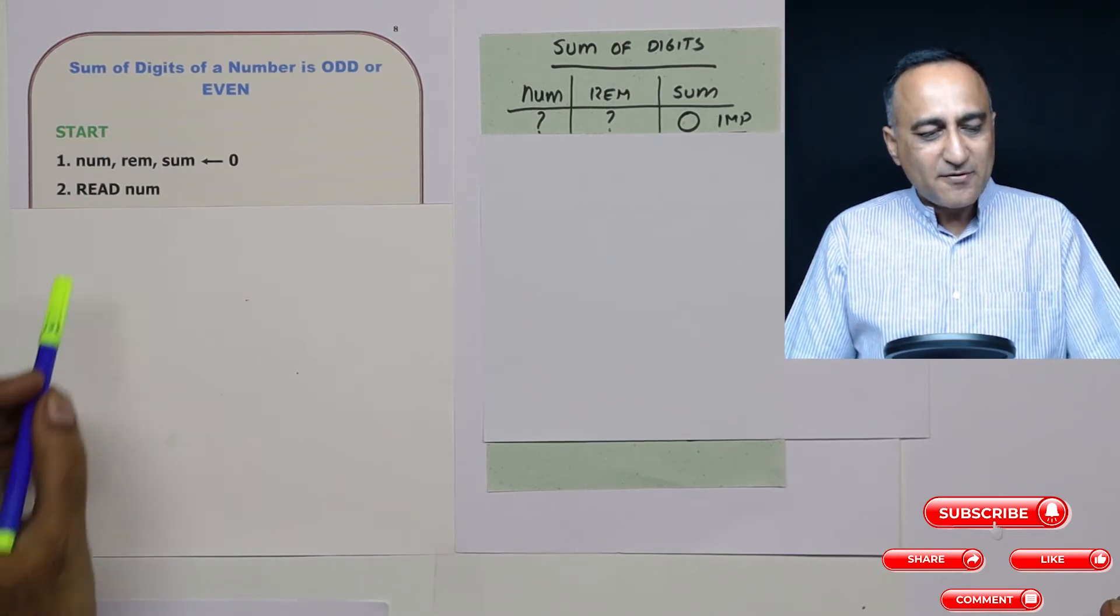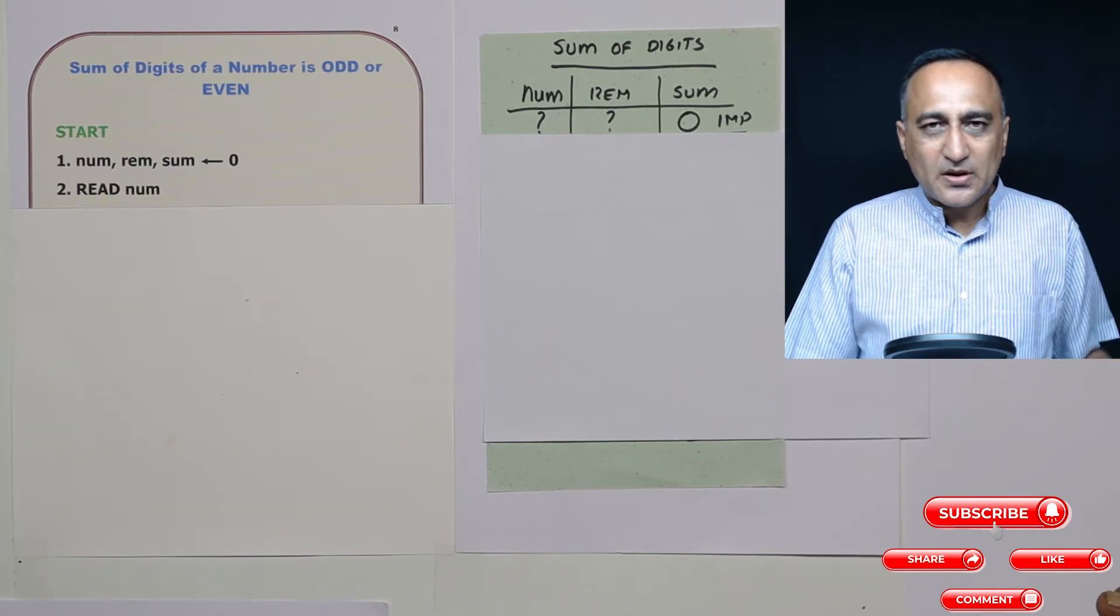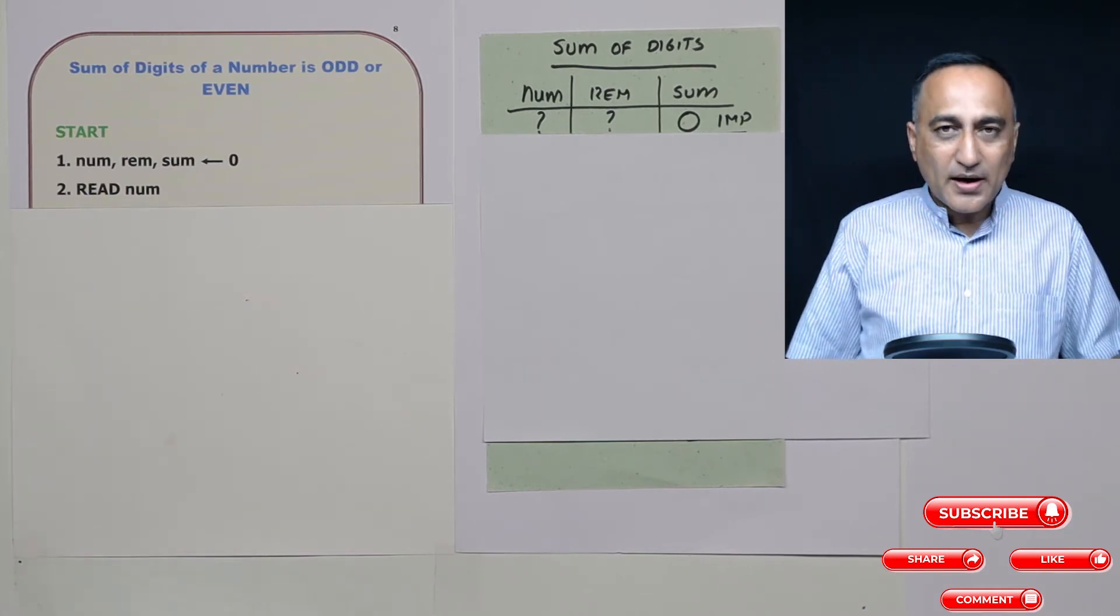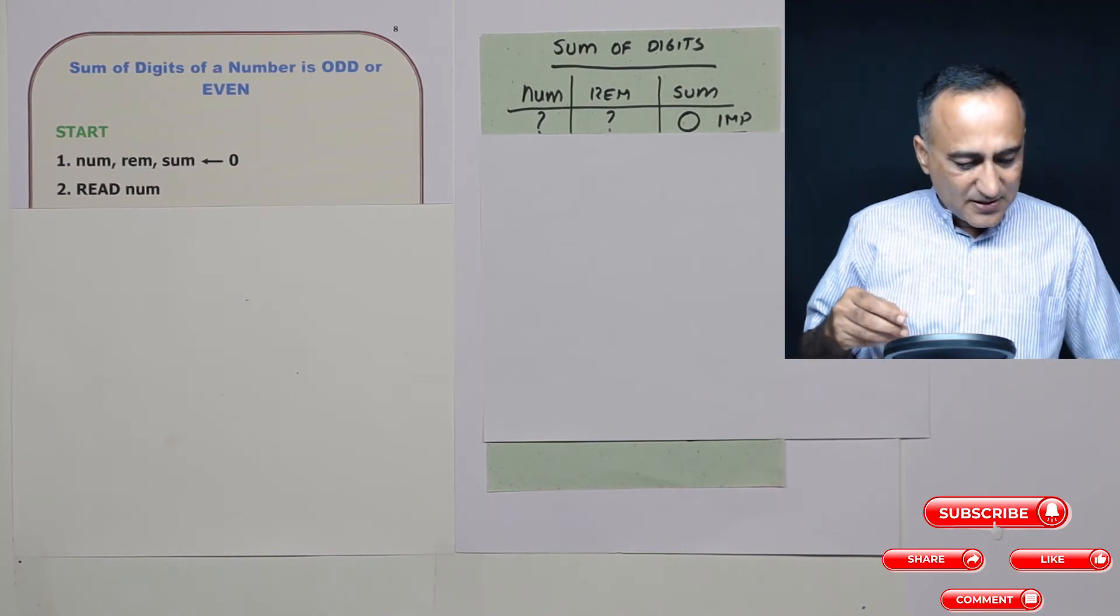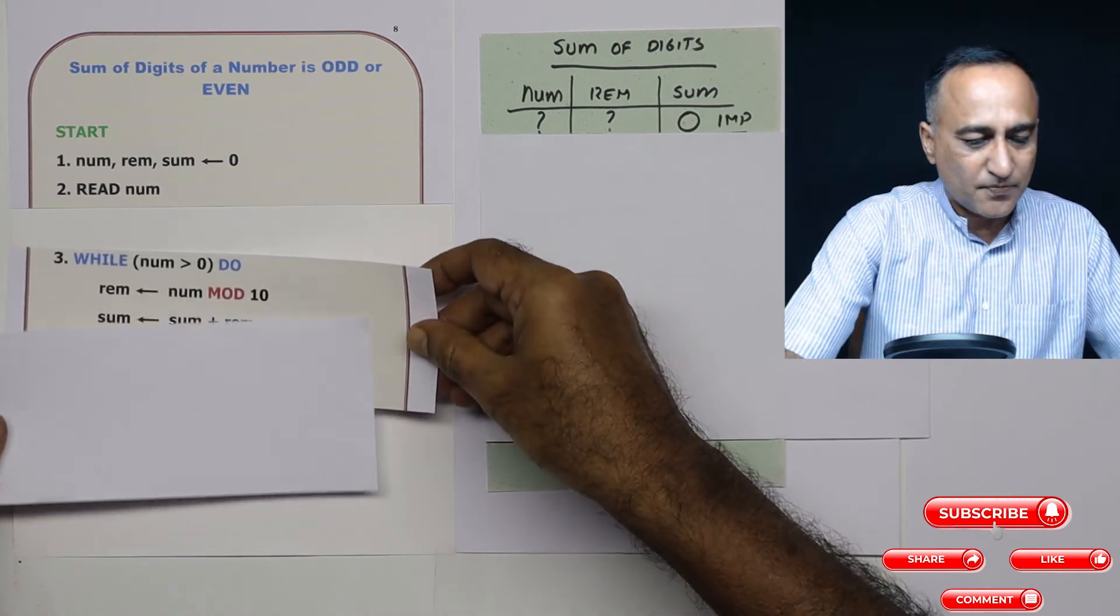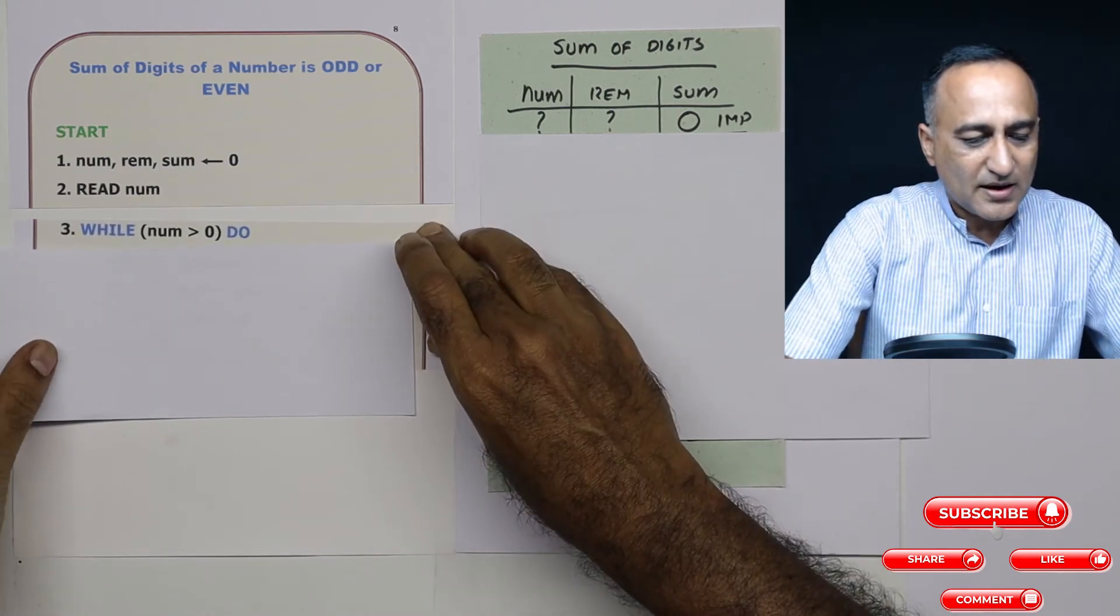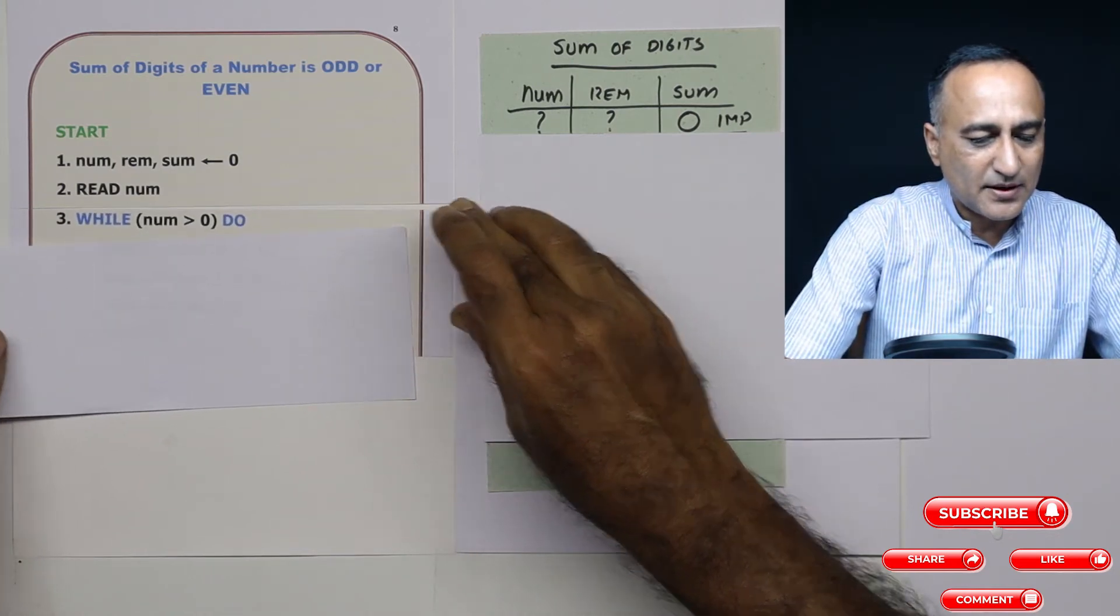So let's say we first read a number. Once we read a number, we are required to process that number as long as that number is greater than zero. So as long as that number happens to be greater than zero...